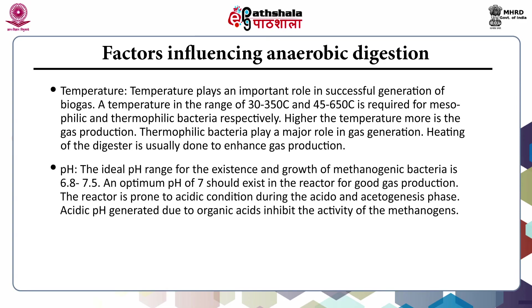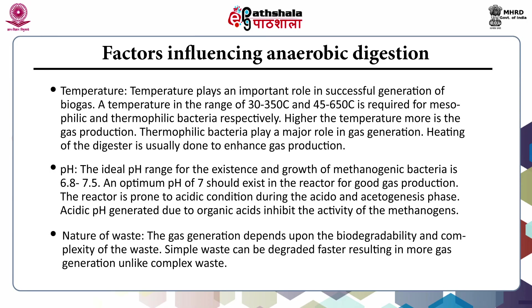The next factor is pH. The ideal pH range for biogas generation, especially for methanogenic bacteria, is 6.8 to 7.5, with an optimum of 7. The reactor is prone to acidic conditions during the acidogenic and acetogenic phases. Acidic pH generated due to organic acids inhibits the activity of methanogens. Regarding the nature of waste, it depends on the biodegradability and complexity of the waste. Simple waste degrades faster and results in more gas generation, unlike complex waste.